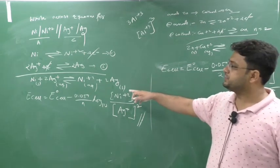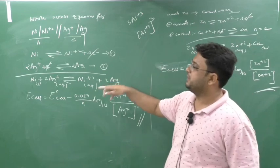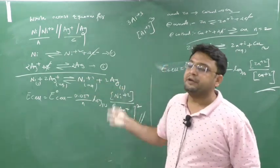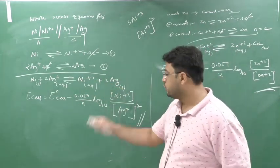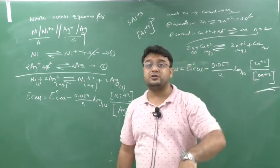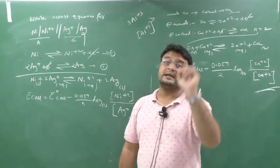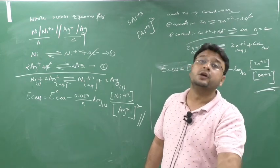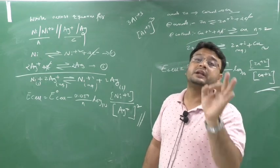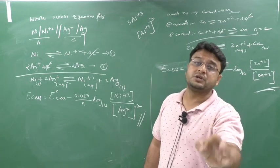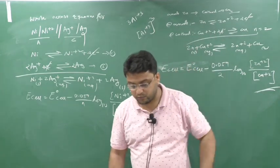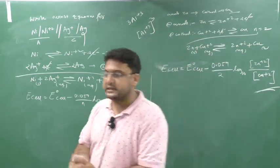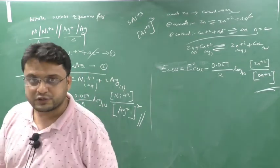Always, to write the Nernst equation directly, write the net reaction and derive product over reactant. But if asked to derive the Nernst equation, you must write the reduction reaction for both cathode and anode. If asked to write the Nernst equation, write the net reaction and apply the formula. If the number of moles appears before an ion, it will go as a power. That's it for today. In the next class we will solve numerical problems based on the Nernst equation.